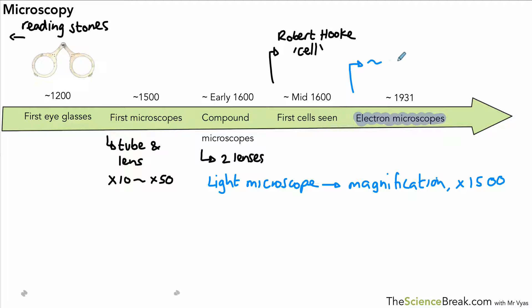Electron microscopes actually work a lot better and they can magnify up to half a million times, 500,000 times. So they make objects look 500,000 times bigger than they actually are. The other great thing about electron microscopes is that they have what's called high resolution, much higher resolution than light microscopes.